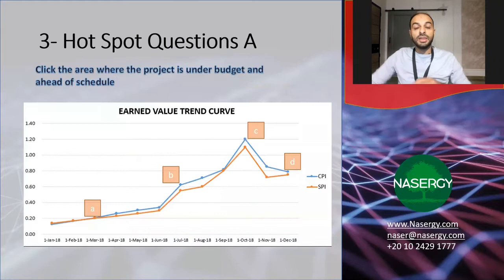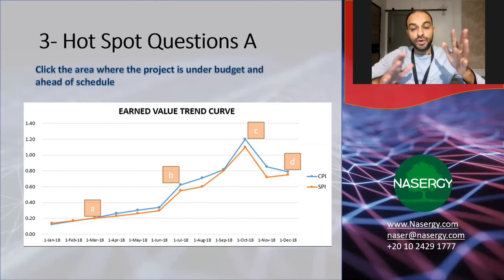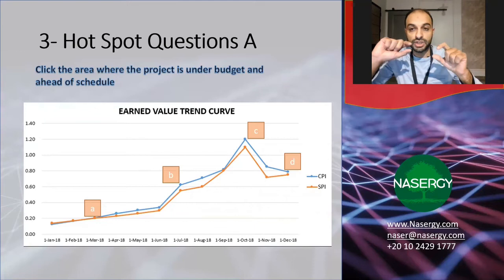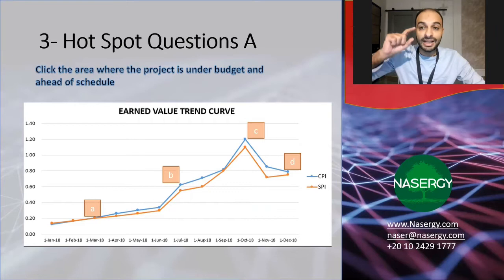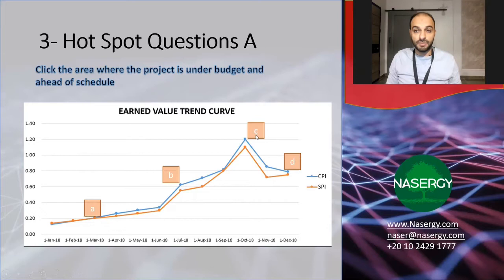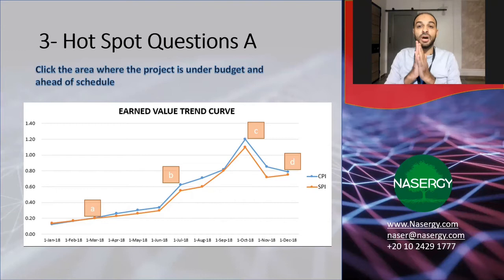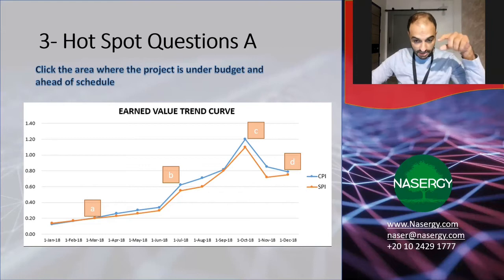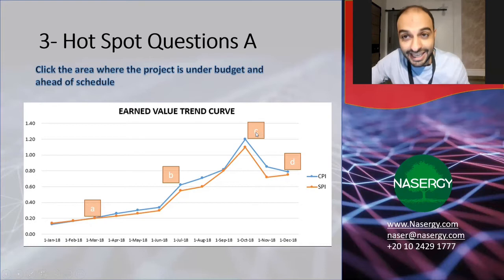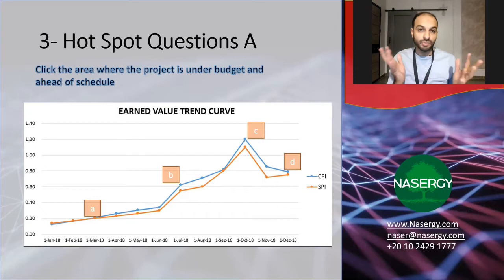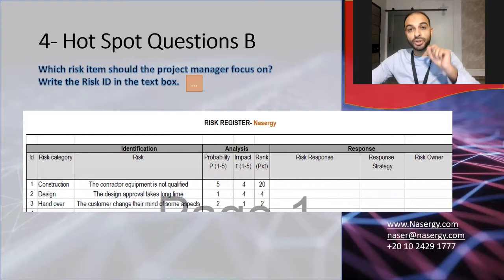The third question type is hotspot questions. You will have a curve on screen and you are asked to select one of the highlighted boxes as the right answer by clicking directly on the curve. For example, the question might say: click the area where the project is under budget and ahead of schedule — meaning CPI greater than 1 and SPI greater than 1. The correct answer would be area C, and you click on it directly.